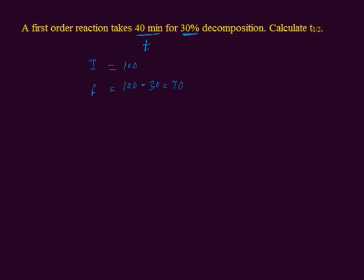Since the reaction is first order, we apply the formula for the first order reaction. The formula is: K, the rate constant, is equal to 2.303 divided by time T, multiplied by log of the initial amount of the reaction divided by the final amount of the reaction. The initial and final values are given, and time is also given. We can plug in all these known variables in this equation and find out rate constant K.